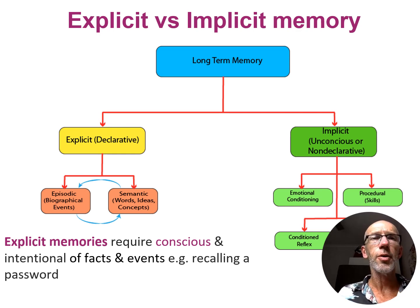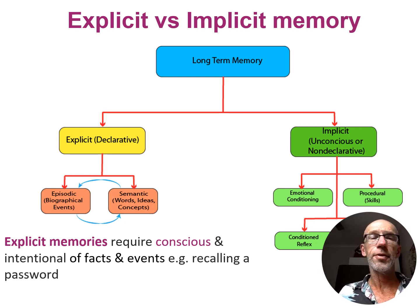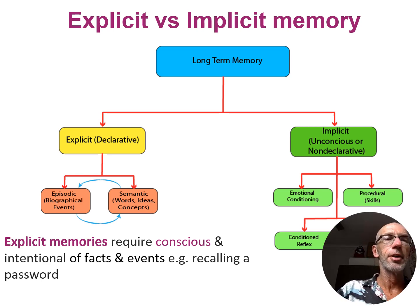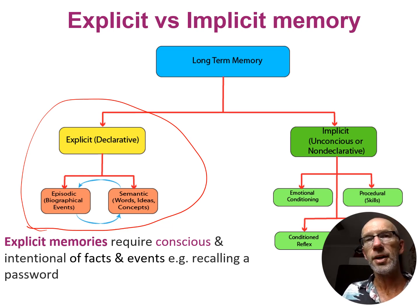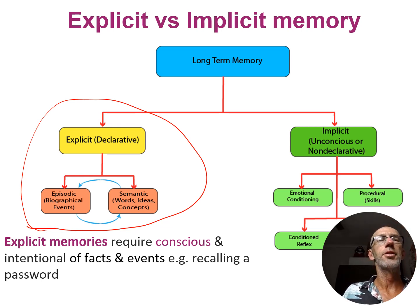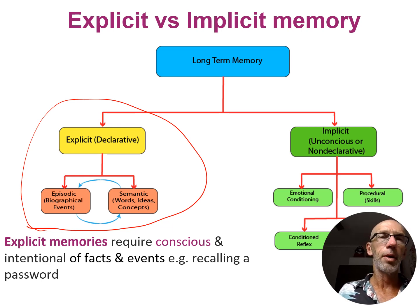Greetings psychology students. Today we're going to explore the three brain regions that are involved in explicit memory that feature in the psych course. So before we go there, let's just quickly recap what we mean by explicit memory. An explicit memory requires conscious and intentional recall to bring that back into our present experience. It is made up of semantic memories, which are facts and shared knowledge, and episodic memories, which are autobiographical experiences.